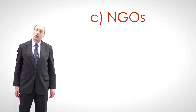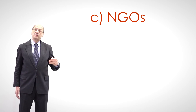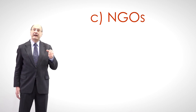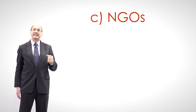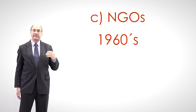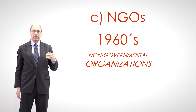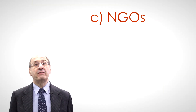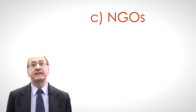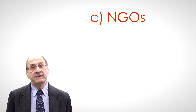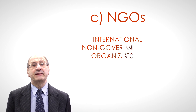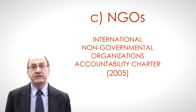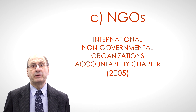As we have seen before, the momentum of the state-led human rights movement after World War II cooled down in the 1950s. Starting in the 1960s, non-governmental organizations, or NGOs, spurred international human rights to acquire political legitimacy and legal status worldwide. In 2005, several NGOs such as Amnesty International, Greenpeace, and Oxfam signed the International Non-Governmental Organization's Accountability Charter, which, while not a legally binding document, sets forth professional criteria for NGOs to become more accountable.